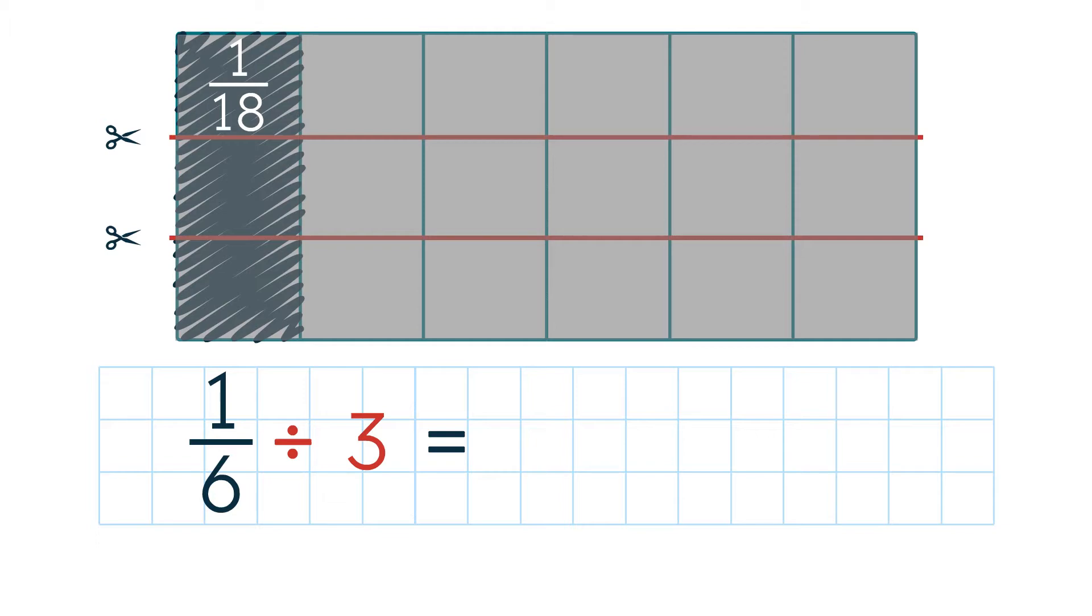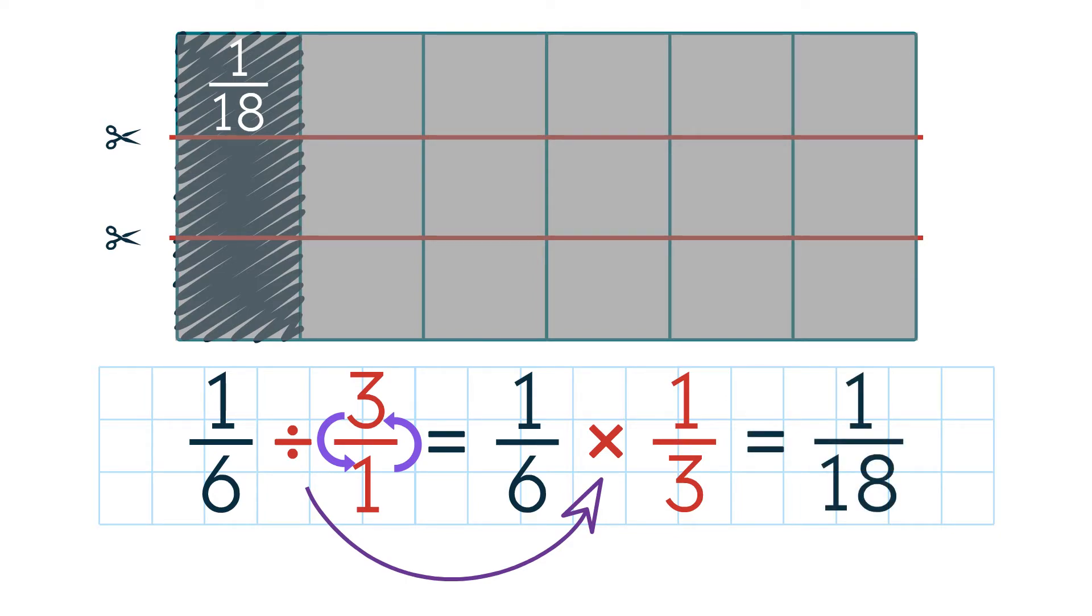We can solve the division problem by solving a related multiplication sentence. Remember, instead of 3, we can write 3 over 1. Now let's write the multiplication sentence. We keep 1 over 6 the same. We change the division sign to a multiplication sign. Now we flip 3 over 1 to get 1 over 3. Finally, we multiply the fractions. We get 1 over 18. So 1 6th divided by 3 is 1 over 18.